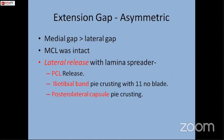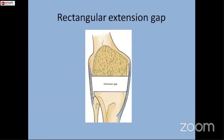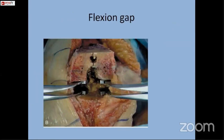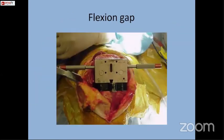Following the basic principle of gap balancing, the tighter lateral structures in this asymmetric extension gap were released by iliotibial band pie-crusting using number 11 and number 15 blades, and there was minimal need for posterolateral capsular release in our case. After achieving a completely symmetric and balanced extension gap equal to the flexion gap, the flexion gap was confirmed with reference to three lines: the Whiteside line, the transepicondylar axis, and the proximal cut surface of the tibia. The flexion gap was completely rectangular, confirmed with the proximal cut surface of the tibia.